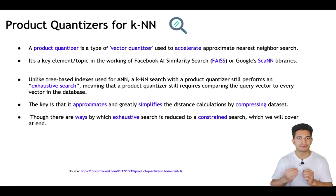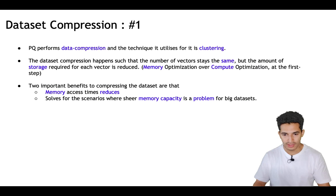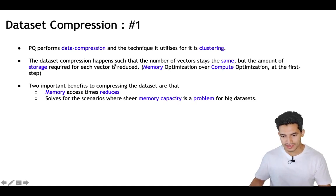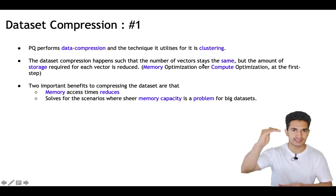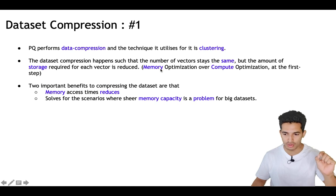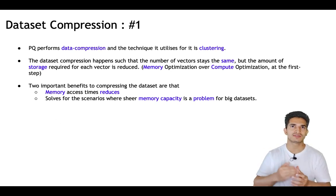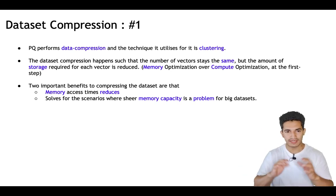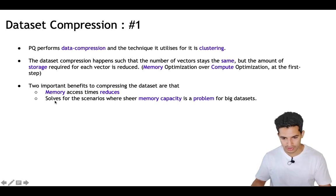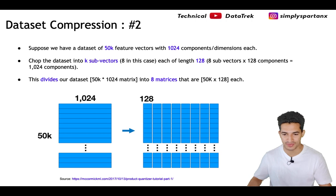What product quantizer does is compress the data, and because of this compression and some approximation it greatly simplifies both memory usage as well as speed. There are also ways by which the exhaustive search can be reduced to a constrained search — we will look at that at the end. Data compression happens by a simple technique called clustering — the same k-means clustering that we are aware of. The dataset size in terms of number of vectors stays the same, but the storage required for each vector is reduced, optimizing for memory first. Two important benefits: memory access time reduces, and since the dataset is smaller we can keep it in main RAM — solving the scenario where machine memory capacity is a problem for big datasets.